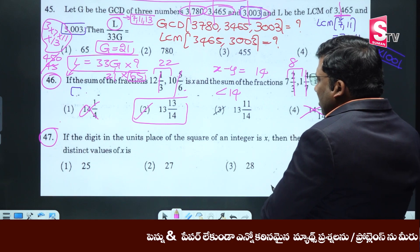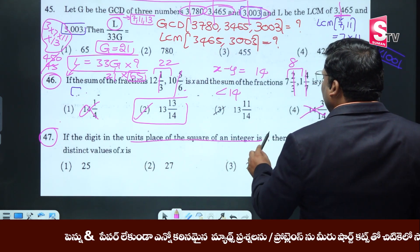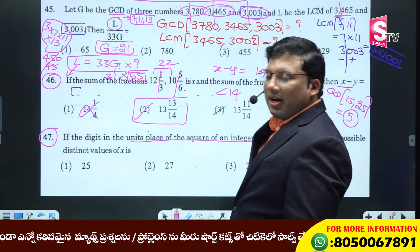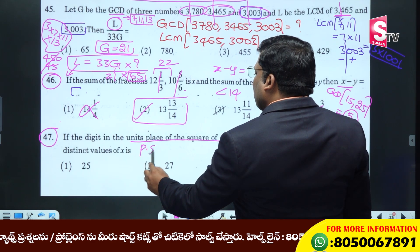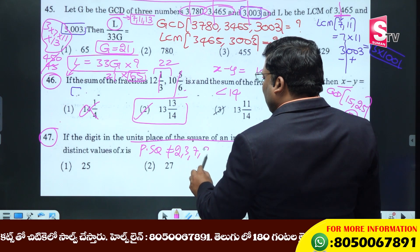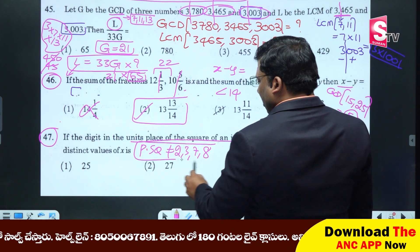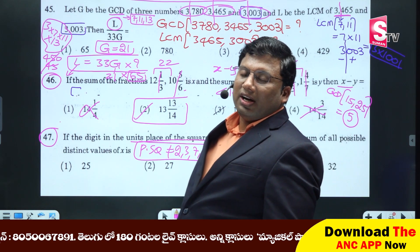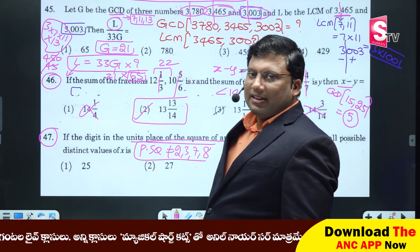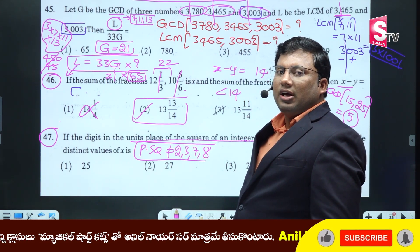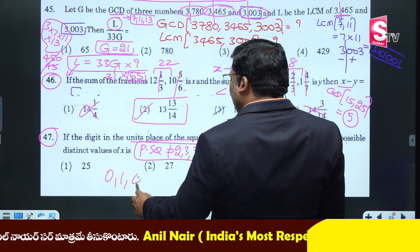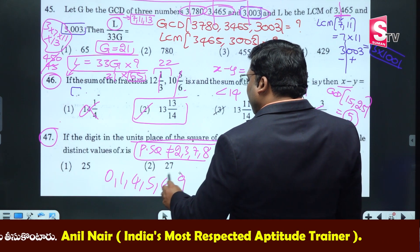If the digit in the unit's place of the square of an integer is x, find the sum of all possible values. For a perfect square, we have already discussed: the unit digit of a perfect square cannot be 2, 3, 8. In speed calculation we discussed this concept. So perfect square unit digits: 2, 3, 8, 9 are not possible. The answer is 25.